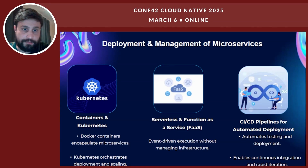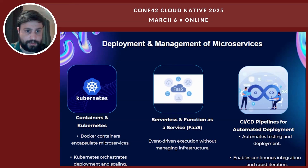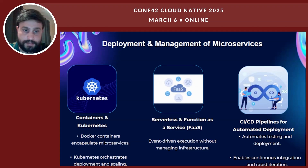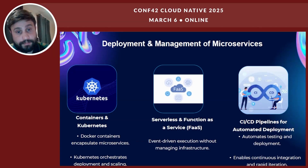To deploy and manage microservices effectively, we use some key technologies. Containers and Kubernetes: containers like Docker package microservices, making them portable, while Kubernetes automates deployment, scaling, and management. Serverless and Function as a Service (FaaS): this allows microservices to execute on demand without managing the infrastructure. CI/CD pipelines automate testing, deployment, and updates, enabling continuous integration and delivery. These tools help streamline development and ensure that applications run smoothly in production.